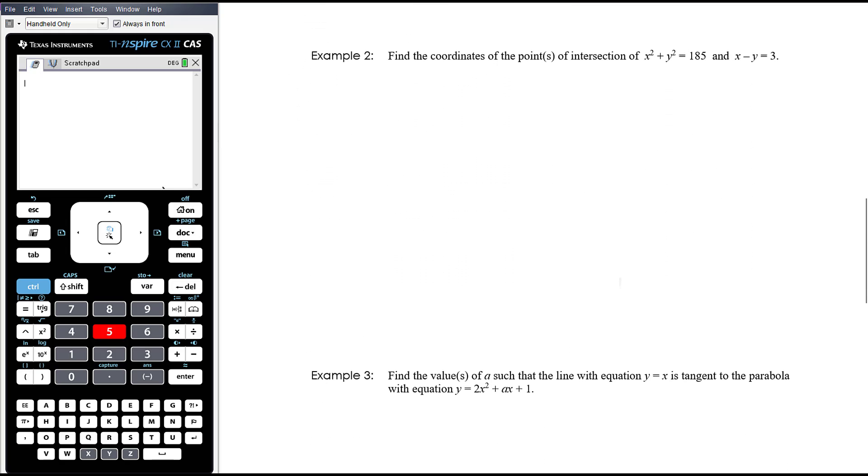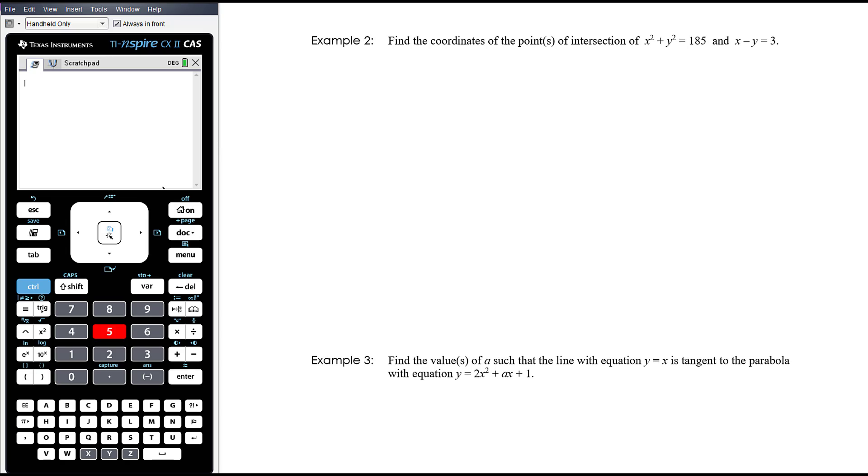All right, example two, find the coordinates of the point or points of intersection of x squared plus y squared equals 185 and x minus y equals 3. This is why this is a slightly random exercise. This is a graph of a circle. So it's where a circle intersects with a line. So it's possible they don't intersect at all. It's possible they intersect just once. It's also possible that they intersect twice.